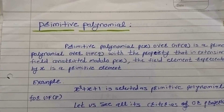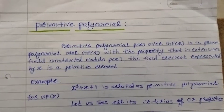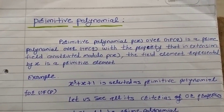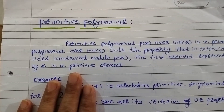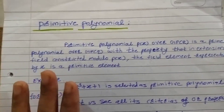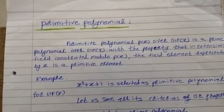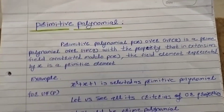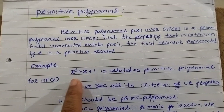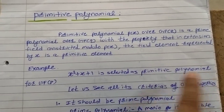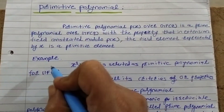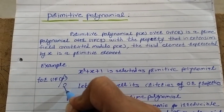In my way, I try to explain all these terms with an example, because when I was teaching my students, after only reading this definition they didn't understand anything. So I decided to create one example and explain it that way. Let us take the example: x³ + x + 1, selected as a primitive polynomial over GF(2).